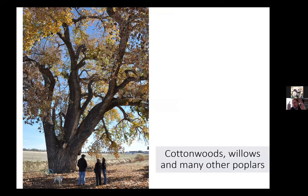Cottonwoods and willows should be planted near streams, or aspen should be planted in the mountains — they're just not well-adapted for a normal average landscape setting along the Front Range. If you've got acreage and have a lake or stream, a willow or cottonwood might be appropriate nearby. But in a standard yard: too big, too messy, too short-lived, they sucker — fast growing is what recommends them, but we already talked about the negatives of that.